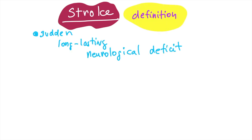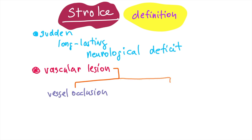So to finally decoil stroke: stroke is a long lasting neurological deficit that is based on vascular lesion, and the lesion is either due to vessel occlusion or vessel rupture.